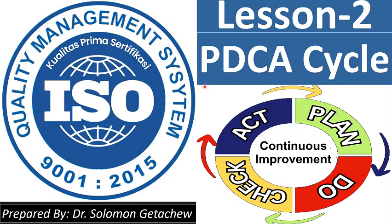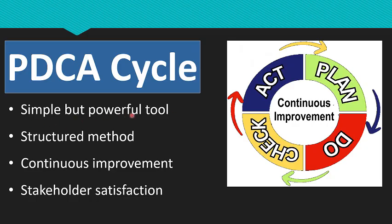Hello and welcome to PDCA Cycle, which is lesson two of the Quality Management System. The PDCA cycle is a simple but powerful tool in helping the organization to improve their processes, products or services and achieve the highest overall performance by following this simple four-stage cycle: Plan, Do, Check, Act.